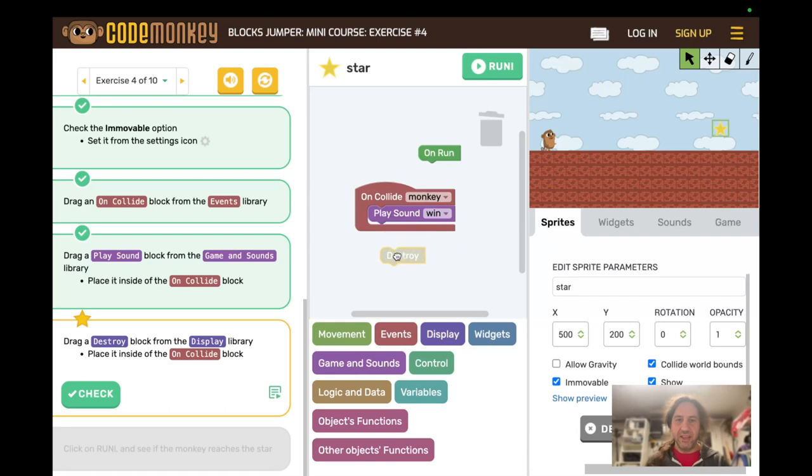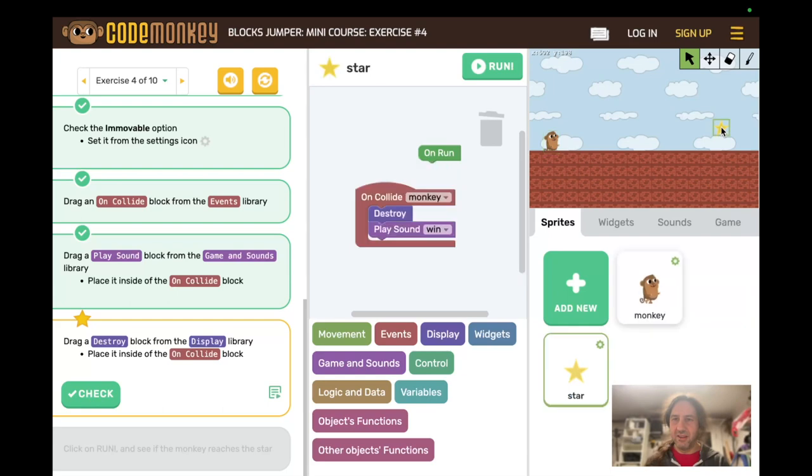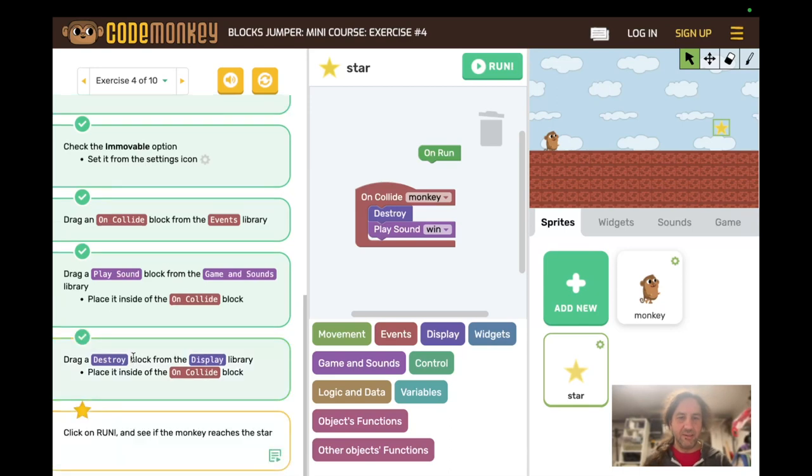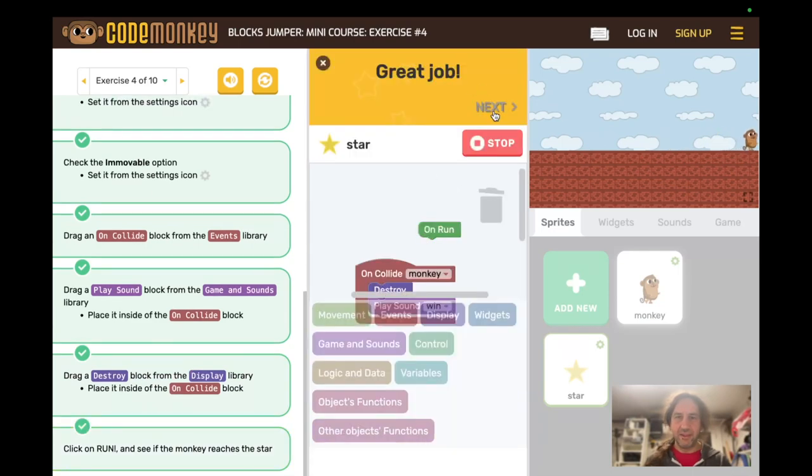So one thing here is that now on the monkey code we don't have any of the collides or play sounds on the star code. We do. And we had to recreate it because the star was deleted. And then click on run and see that the monkey reaches the star. Great job.